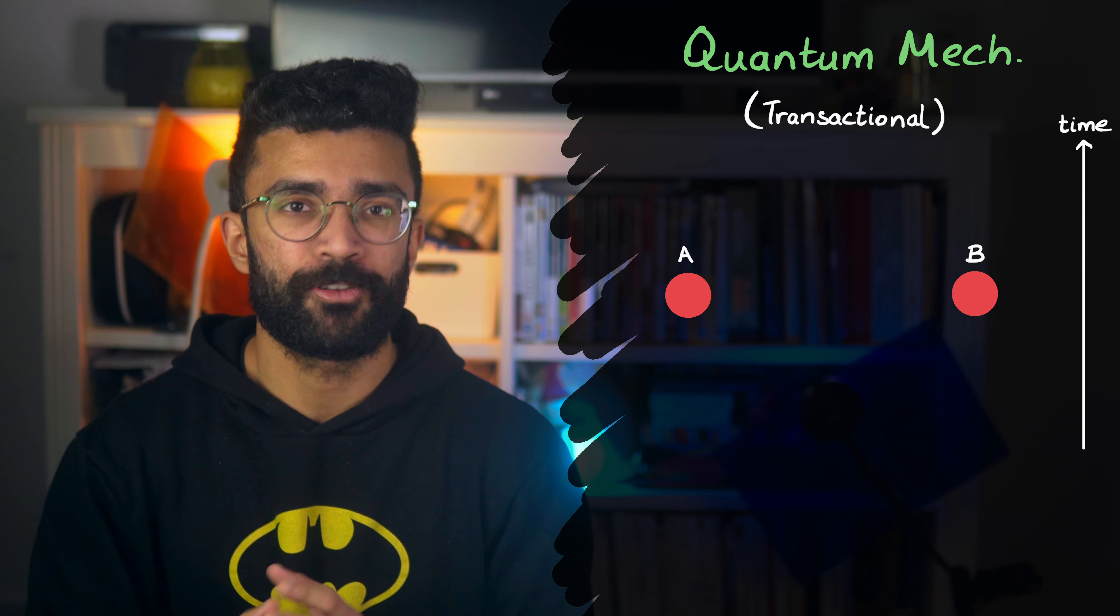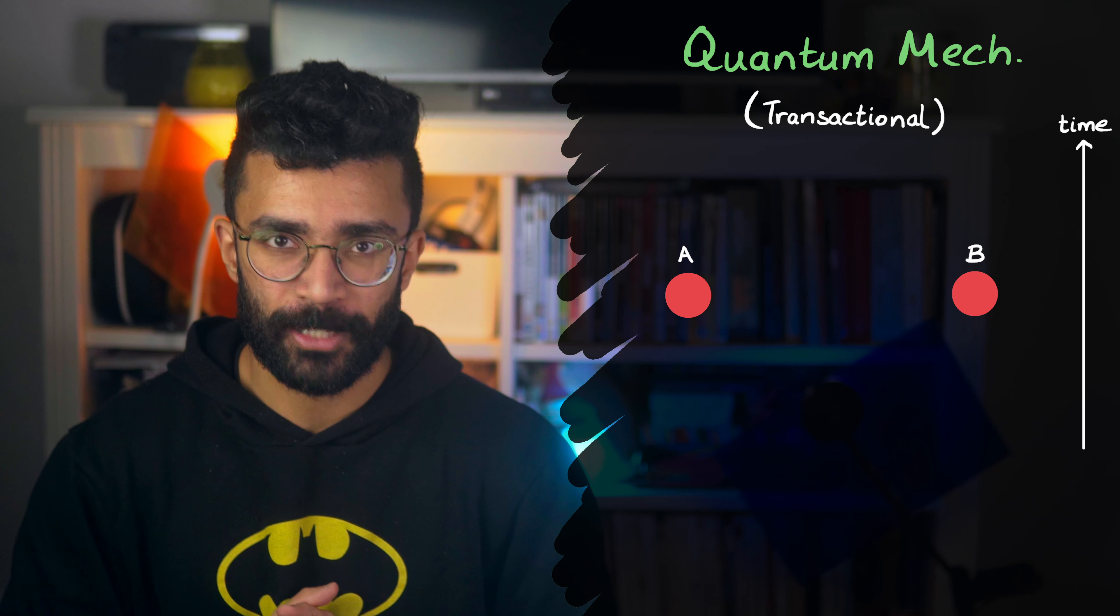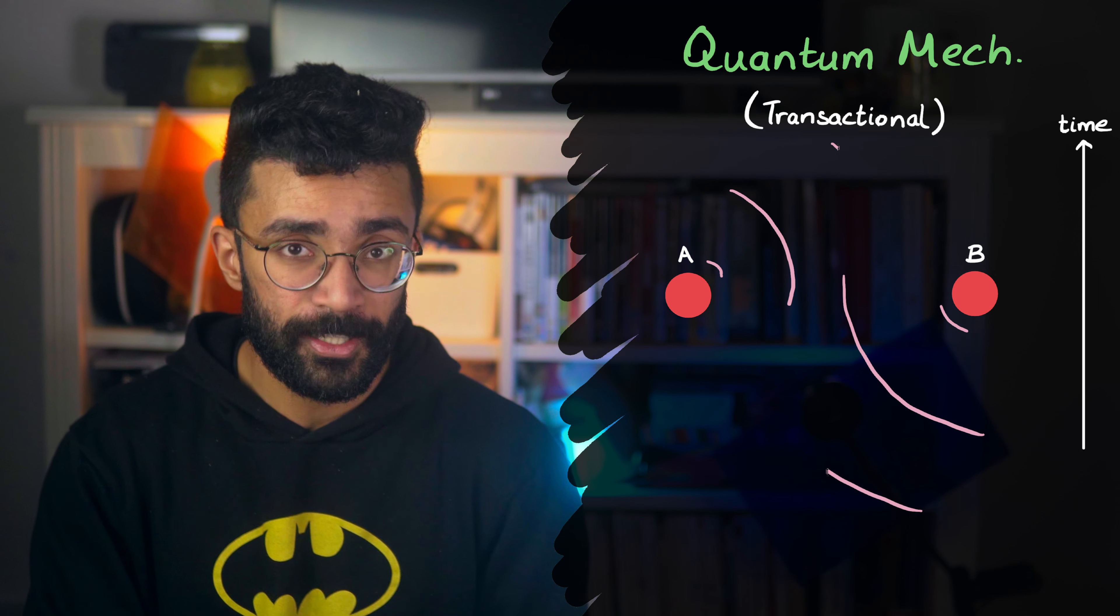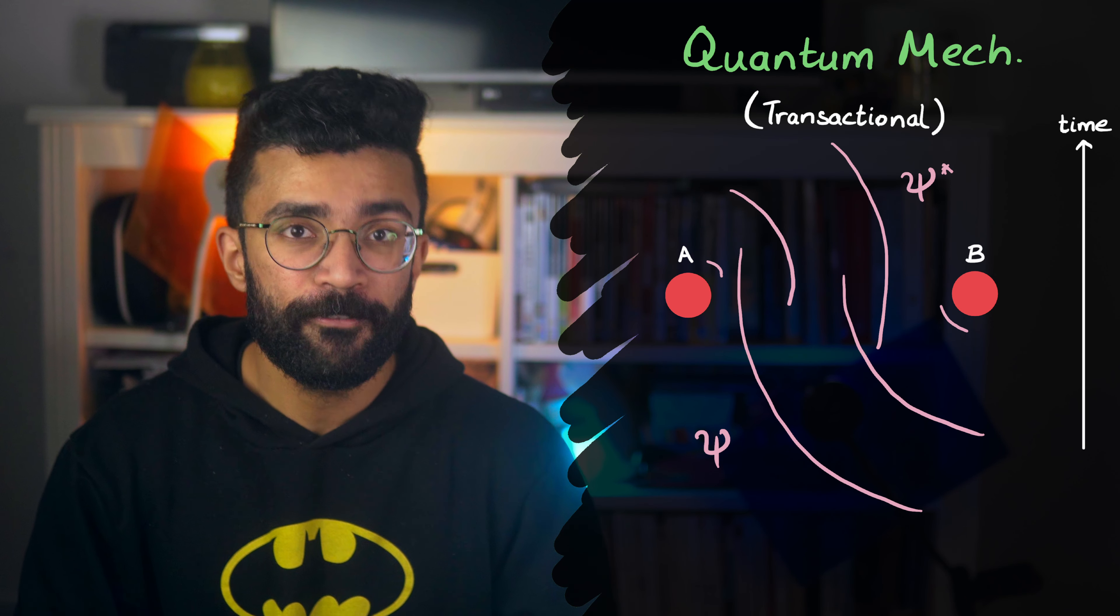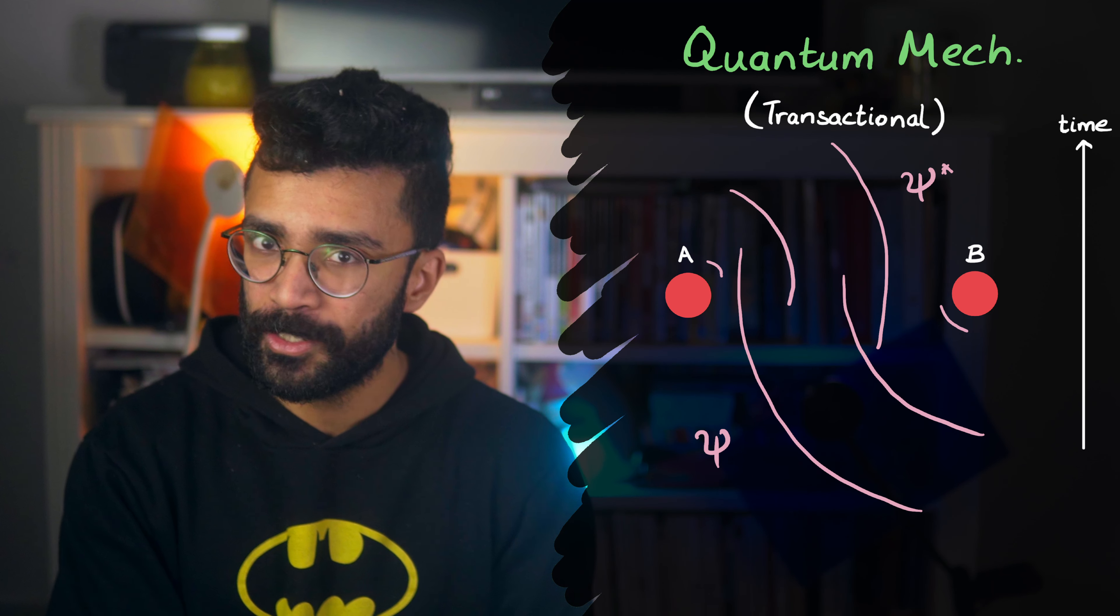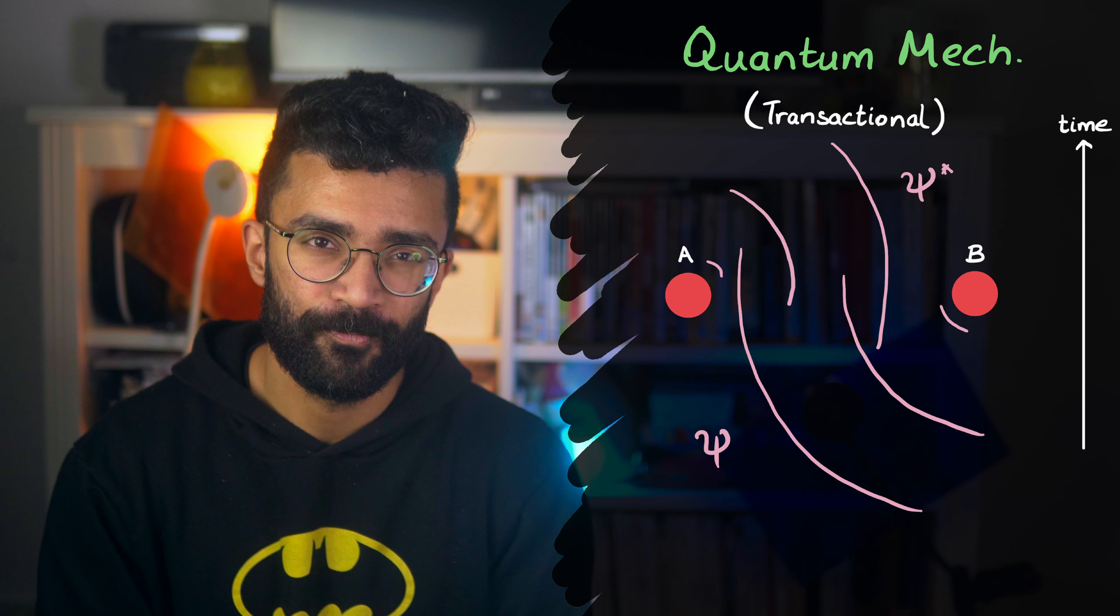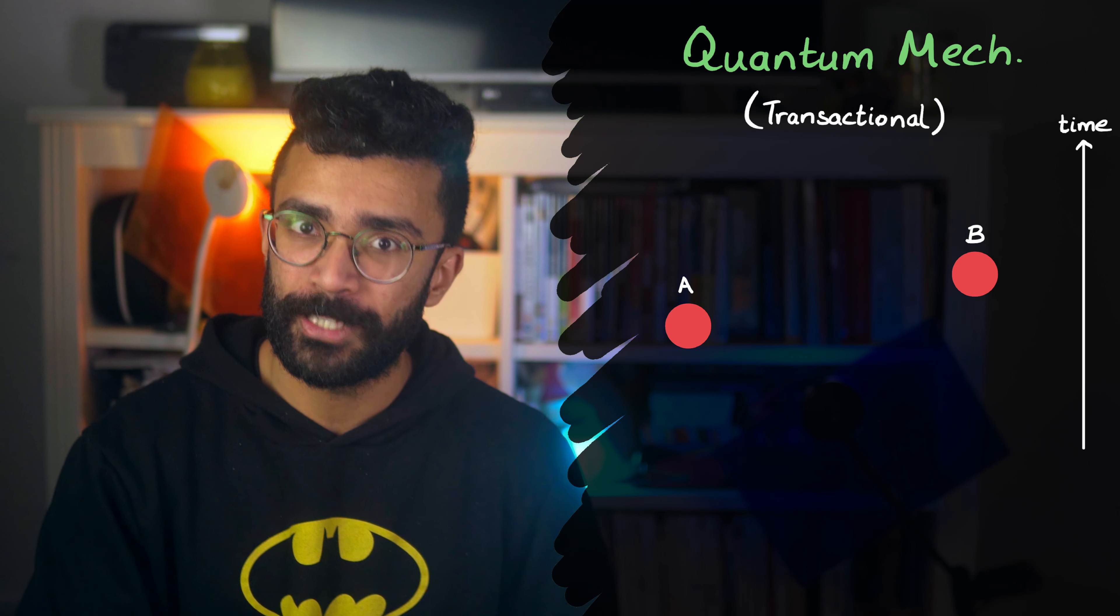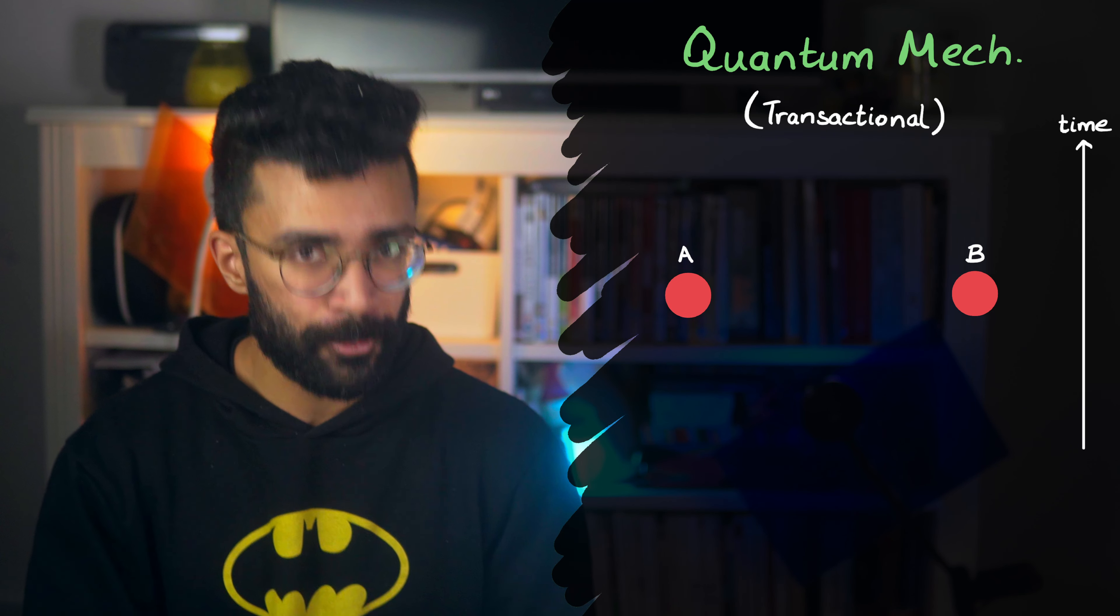One such interpretation is known as the transactional interpretation of quantum mechanics, and the idea is that every part of a system that we study constantly emits wavefunction-like waves both forward and backward in time. The thing that we observe gets decided when a wave moving forward in time meets a wave moving backward in time, and they take part in a quantum handshake of sorts.